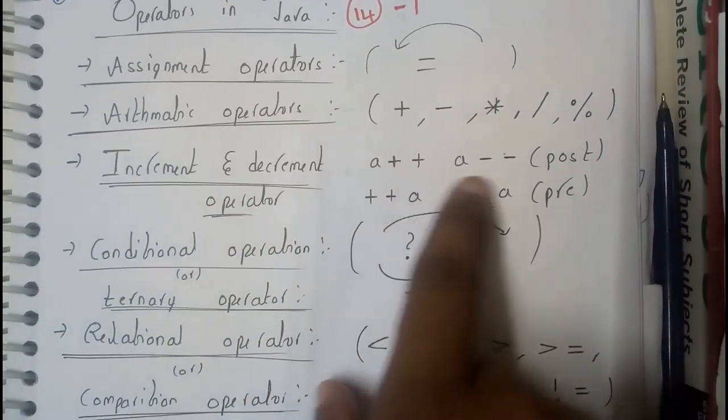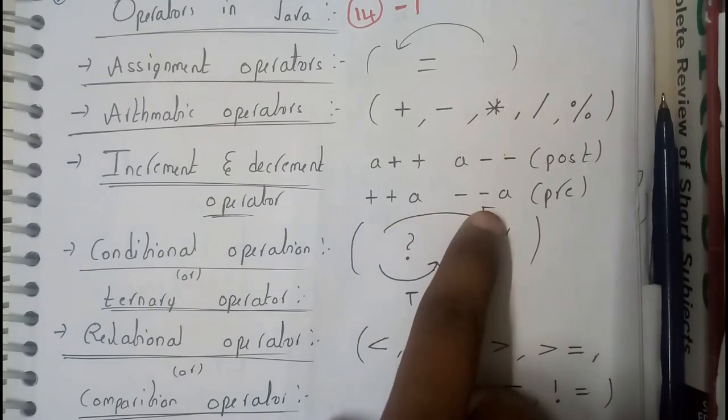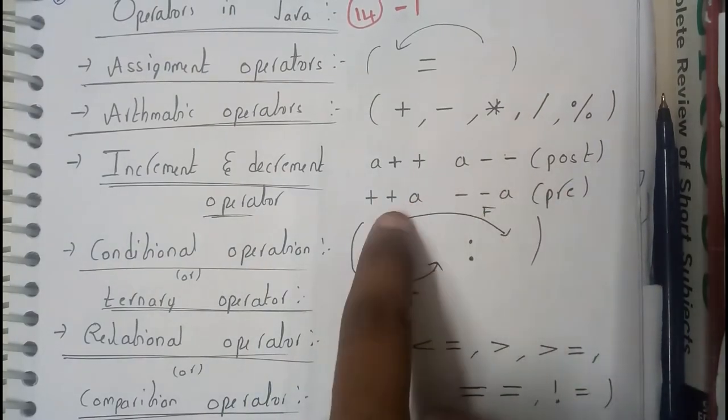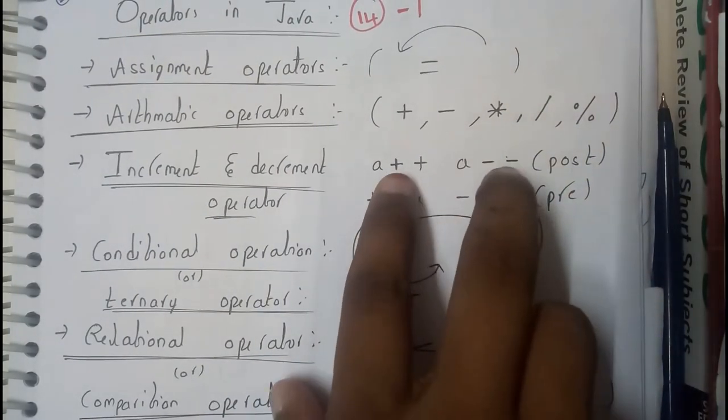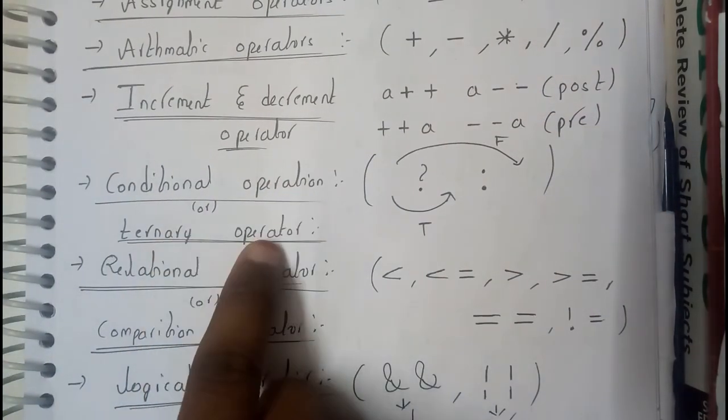This is pre increment, pre decrement, post increment, post decrement. Conditional operator or ternary operator, which is nothing but the first statement. If it is true, it executes the middle part. If it is false, it executes the end part.